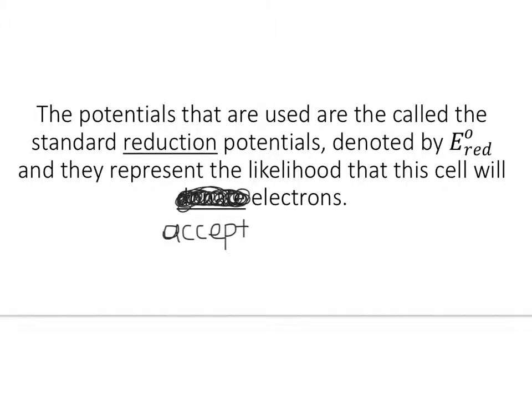So the standard potentials are called the standard reduction potentials. And they're denoted by E standard red, for reduction. They represent the likelihood that this cell will accept electrons. Basically, the likelihood that it will undergo reduction. So the higher the number, the more likely they are to reduce. And the lower the number, the more likely they are to oxidize.